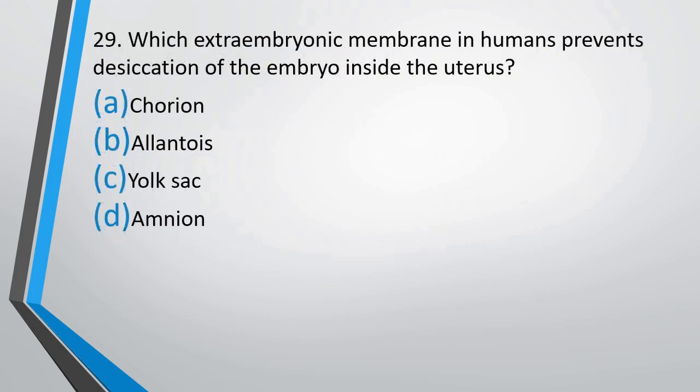Question 29. Which extra-embryonic membrane in humans prevents desiccation of the embryo inside the uterus? (A) Chorion, (B) Allantois, (C) Yolk sac, or (D) Amnion. The correct answer is option D — Amnion.